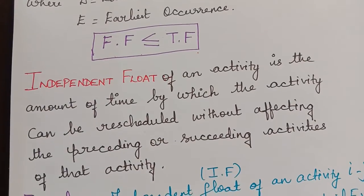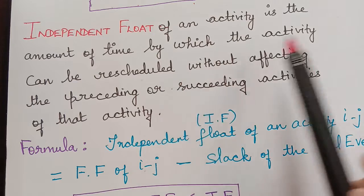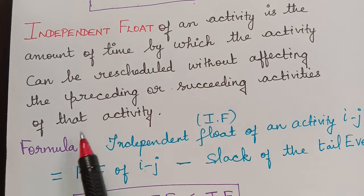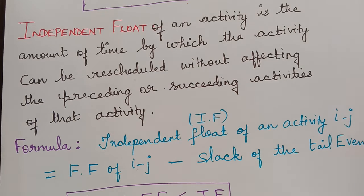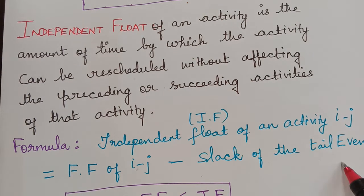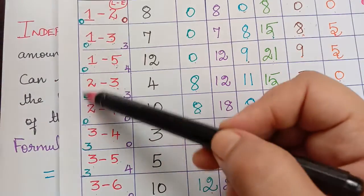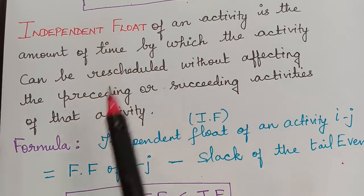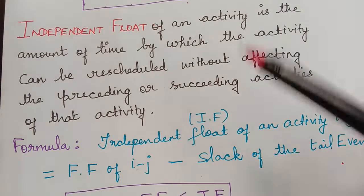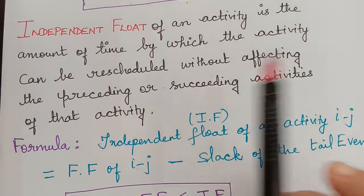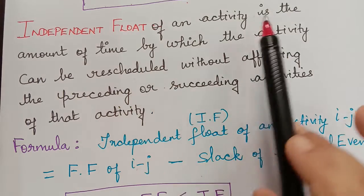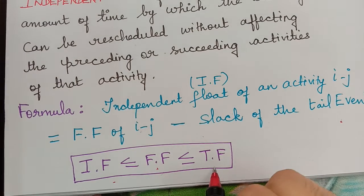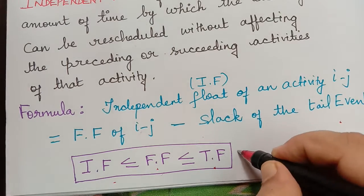The next definition is independent float. Independent float of an activity is the amount of time by which the activity can be rescheduled without affecting the preceding or the succeeding activities. The formula for independent float is: free float minus the slack of the tail event. We also observed that independent float is less than or equal to free float, and free float is less than or equal to total float. This relationship may appear in exam questions.